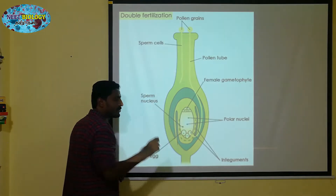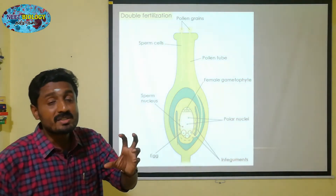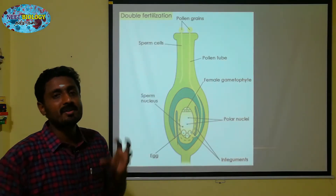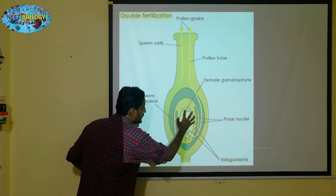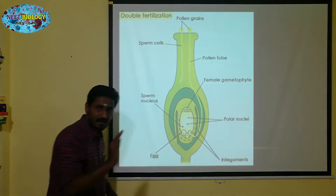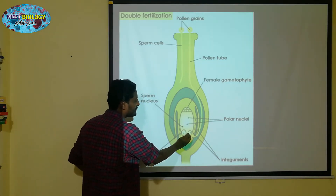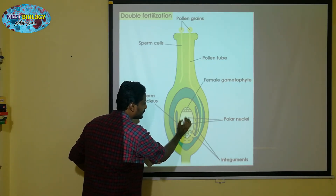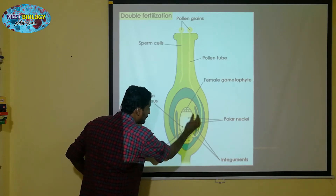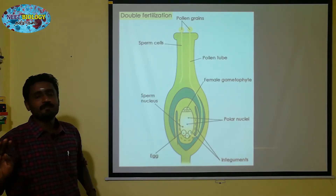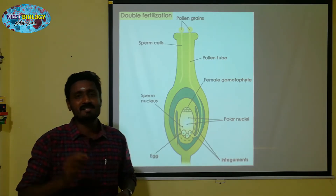When polar nuclei also undergo fusion, it means that it is triple fusion. It's a very common factor. The primary endosperm nucleus is formed. While you can find an embryo sac from the same stage, the embryo and endosperm develop from the same age. You can see that video on double fertilization.